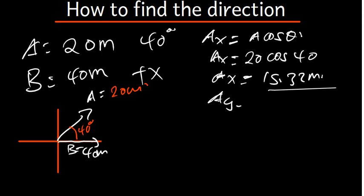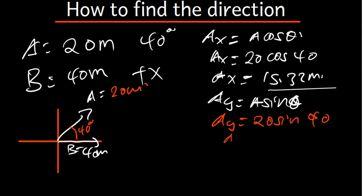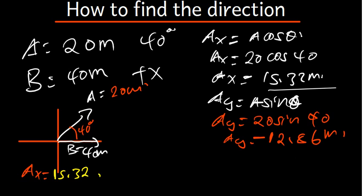Now the y-component: AY equals A sin theta. So AY equals 20 sin 40, which gives us 12.86 meters. So AX is 15.32 meters and AY is 12.86 meters.